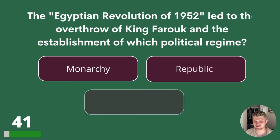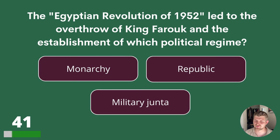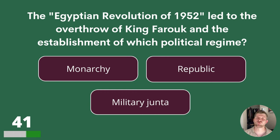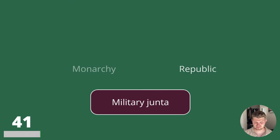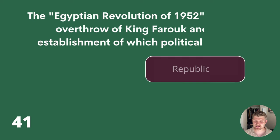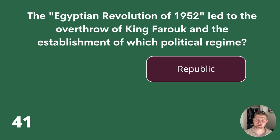Question 41. The Egyptian Revolution of 1952 led to the overthrow of King Farouk and the establishment of which political regime? Monarchy, Republic or Military Junta? The answer is Republic.